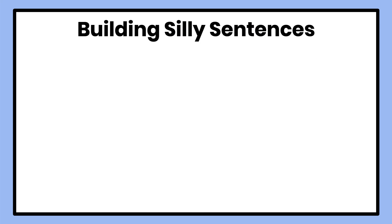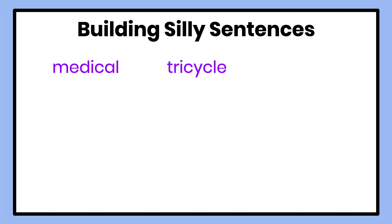Today we'll use the words that we know to make a silly sentence, using words spelled with CAL and CLE at the end. Let's think of some of the words we've been going over. We have our first one: medical. Remember, when we see words with the base word ending in IC — like medic — we know we're going to add the AL to make the ending CAL. Let's think of some more: tricycle. Make sure that you're writing these words down so that you practice saying and spelling our words correctly.